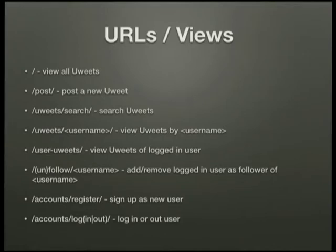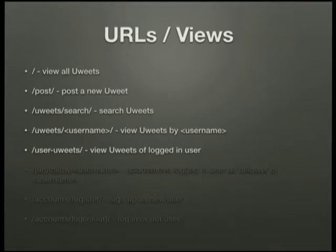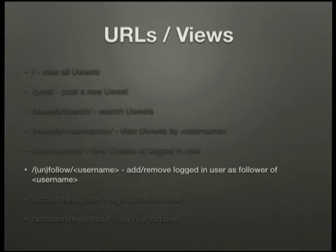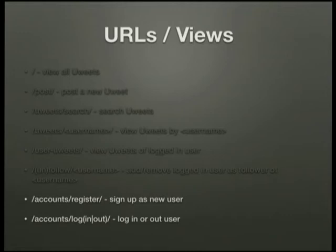The URLs and views we have are also quite simple, and we can break them into three categories. The first few are all about viewing ueets — you can view and post a new ueet, search for a ueet, view all the ueets for a username, and view all the ueets of the current logged-in user. The next two URLs are for following and unfollowing. And then there are a couple of URLs dealing with accounts: a register one and a login URL.